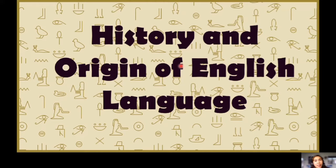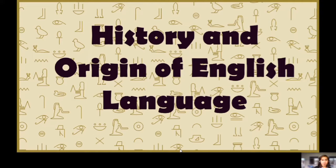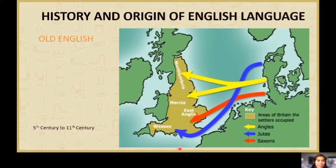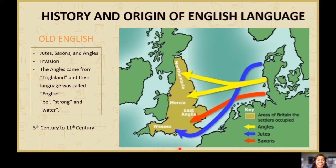Now, for the history of the English language. We cannot really tell where all language came from, but the English language can be tracked. Old English is from the 5th century to the 11th century. There were three groups — the Jutes, the Saxons, and the Angles — that invaded and had a language called Inglalaland, which was later called Engliscisc, producing words like 'bees,' 'strong,' and 'water.' That is Old English. Then came Middle English, wherein there was a Viking invasion and French influence.